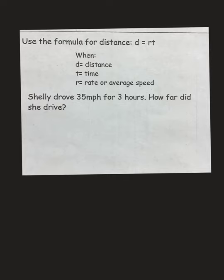So, this next problem starts with a word problem. And, it tells us to use the formula D equals R times T. So, distance equals rate times time. So, keep that in mind when we go to our word problem. It says, Shelly drove 35 miles per hour for 3 hours. How far did she drive? So, in this case, we have T, our time, equaled 3 hours. And, we have our rate, our average speed, was 35 miles per hour.